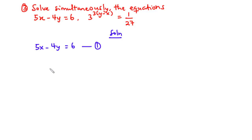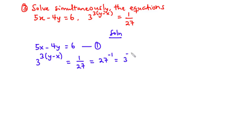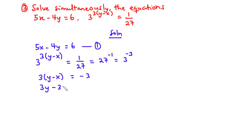For the exponential equation, 3 exponent 3(y minus x) equals 1 over 27. Now 1 over 27 is the same as 27 exponent negative 1, and since 3 exponent 3 equals 27, this becomes 3 exponent negative 3. With the same bases, we compare exponents: 3(y minus x) equals negative 3. Expanding gives 3y minus 3x equals negative 3. Dividing through by 3: y minus x equals negative 1. We call this equation 2.